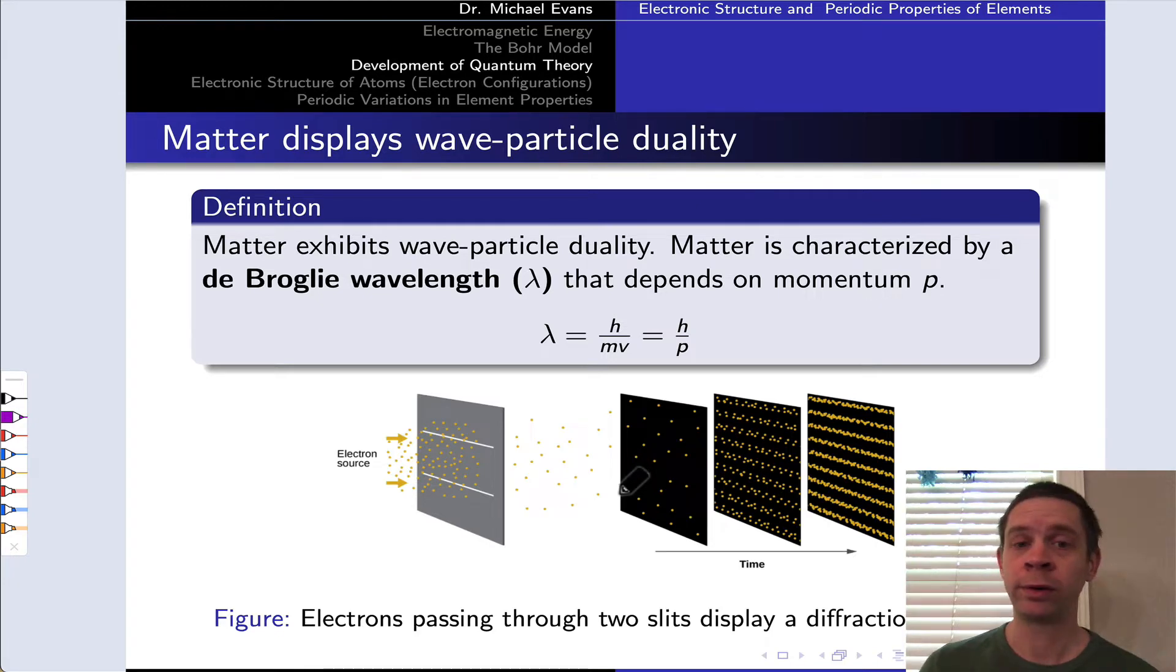A key idea here, and where we're going to start, is the idea of the de Broglie wavelength. De Broglie's idea was, look, if light, which is classically wave-like, can have particle-like properties,